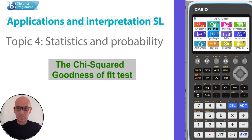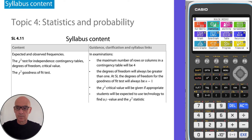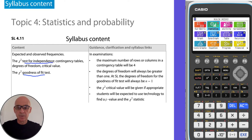Hello. In this video I'm going to talk to you about the chi-squared goodness of fit test. It's one of two chi-squared tests that you will learn about — the goodness of fit test and the chi-squared test for independence being the other one.